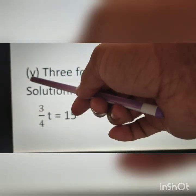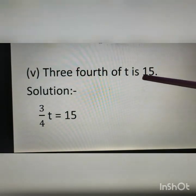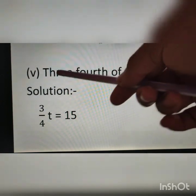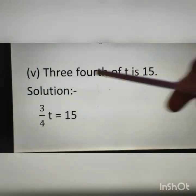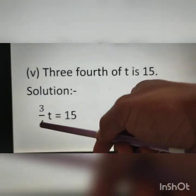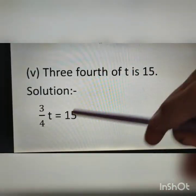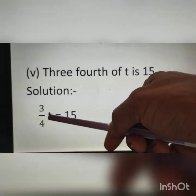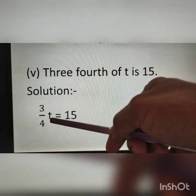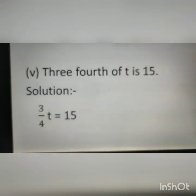Question number 5: three-fourths of t is 15. Three-fourths means 3 upon 4 of t. So 3 upon 4 into t is 15. Therefore, 3 upon 4 into t is equal to 15 is the equation.